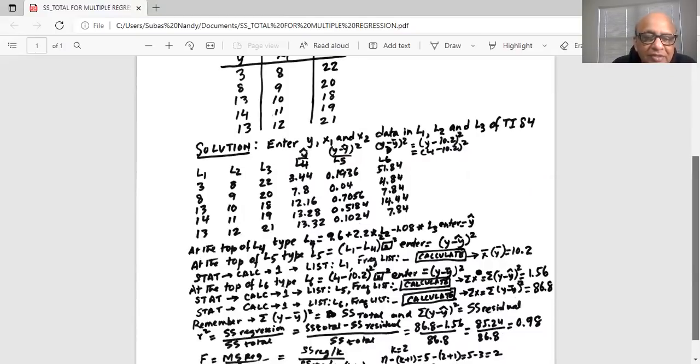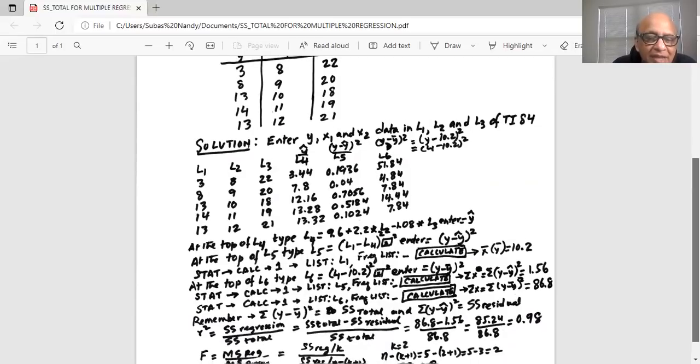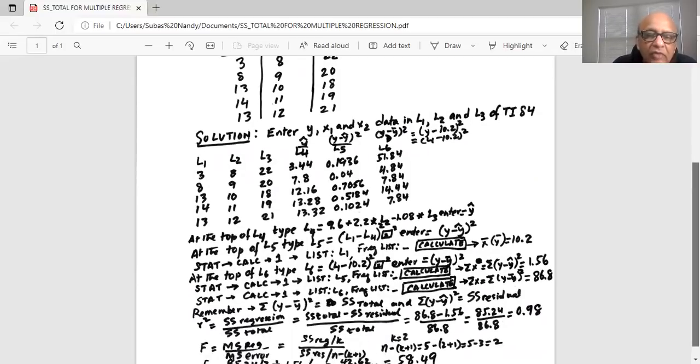We repeat the same for L6. Stat, calc 1, list is L6 now. Remember L6 is second six, frequency list is empty, calculate. Sigma x is nothing but sum of y minus y bar square is 86.8. So we know sum of y minus y bar square is sum square total and sum of y minus y hat square is equal to sum square residual.